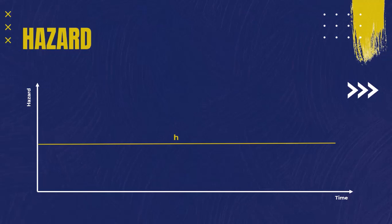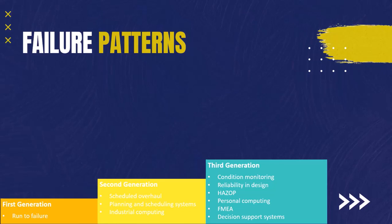But actually having a constant failure rate over the lifespan of an asset is not always the case. In some cases the failure pattern could be decreasing or increasing with time. In other cases, as we are going to learn today, we need to go back to the maintenance generations which we discussed earlier in the introduction to the maintenance lecture.